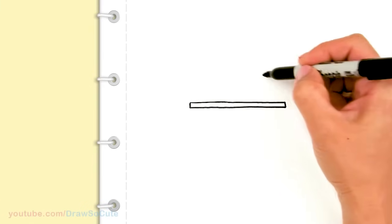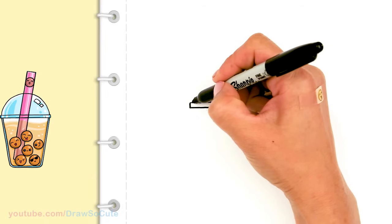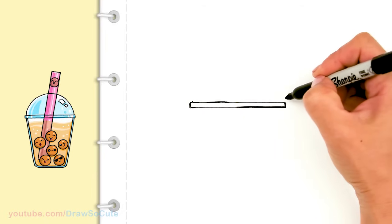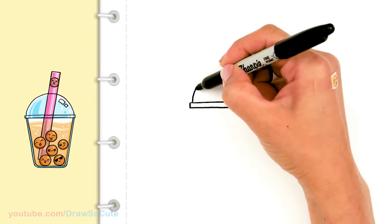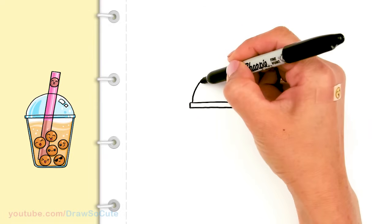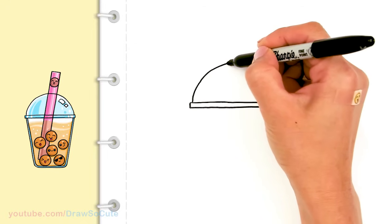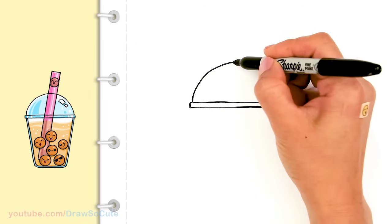Then from there we're going to draw a big dome that covers this. So go right here and we're going to go all the way up here. Nice round dome. And bring it back down.